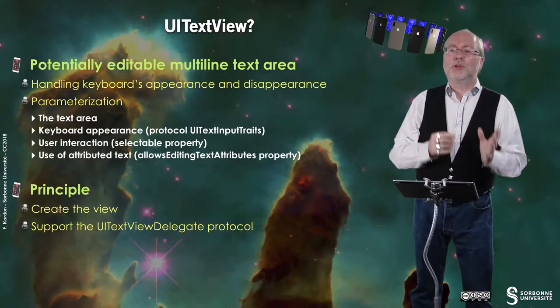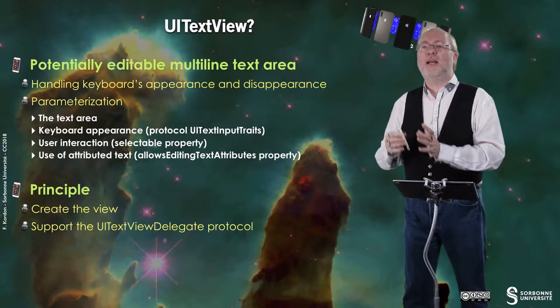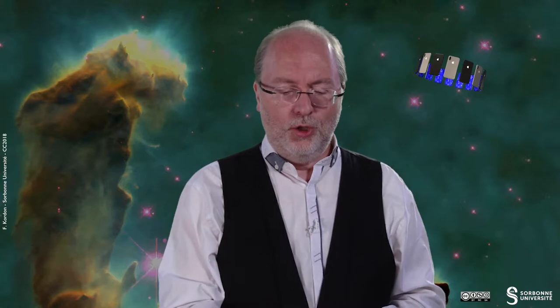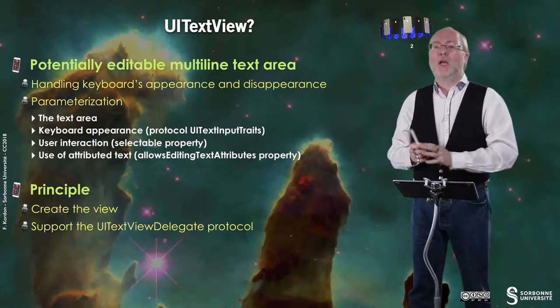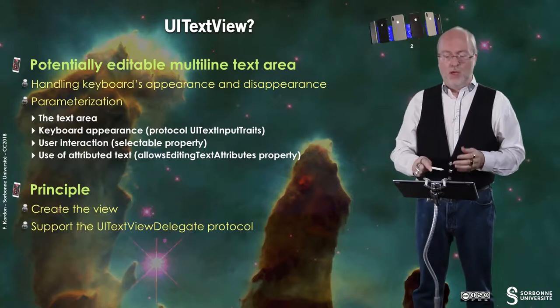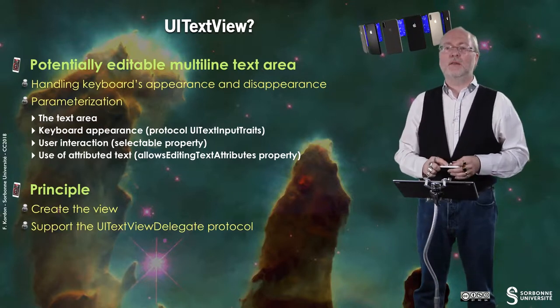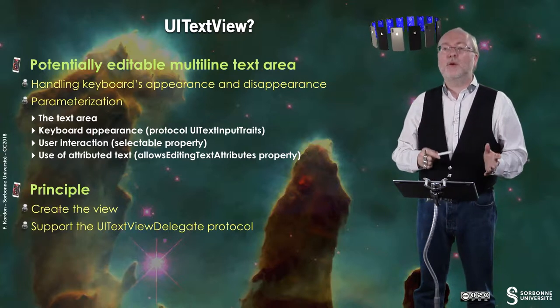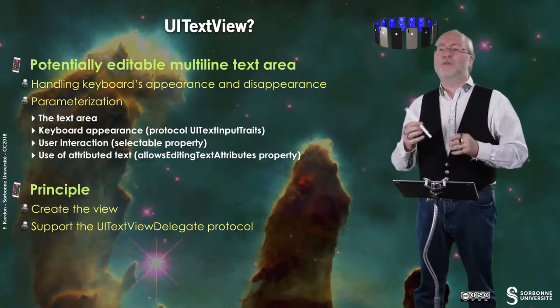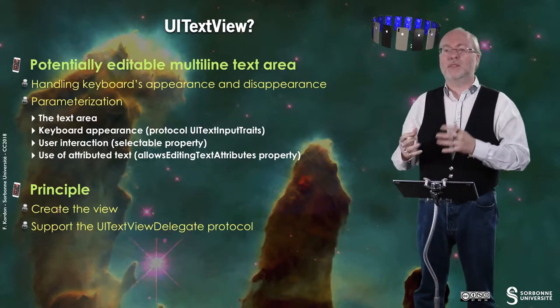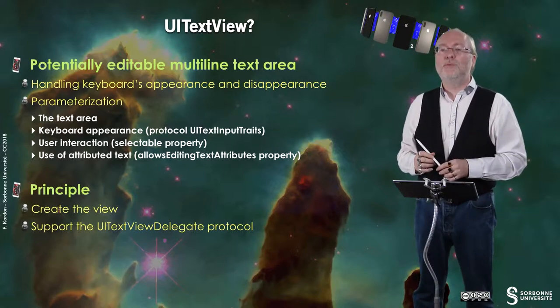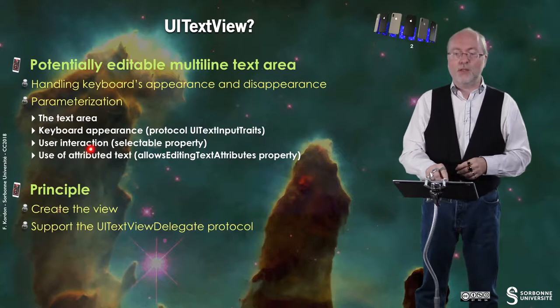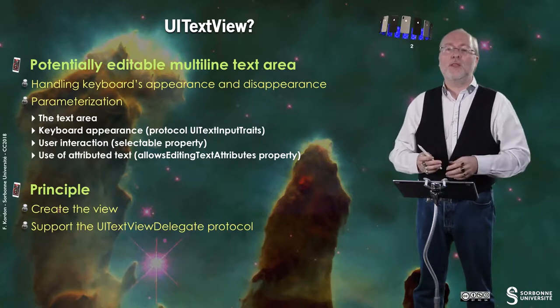A UITextView is a potentially editable multi-line text area. Within this mechanism, you handle the keyboard's appearance and disappearance, and you can parametrize this object — you can parametrize the text area, the keyboard appearance. In fact, you can control when it appears and also do things when it appears, thanks to a protocol called UITextInputTraits.